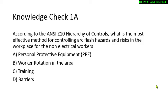Sample question: According to the hierarchy of controls, what's the most effective method to control arc flash hazards for non-electrical workers? Options: A) PPE, B) worker rotation area, C) training, D) barriers. The answer is D — barriers. This is what I call 'pick the best of the five.' Sometimes they list four of them and you have to identify the right order — engineering controls comes first, not last.